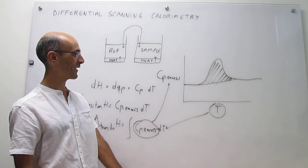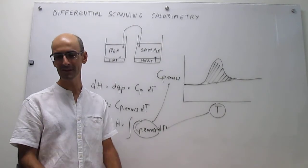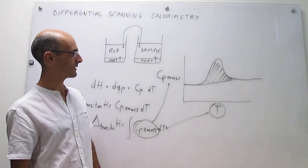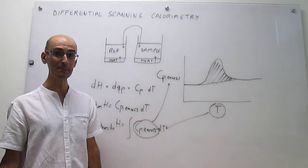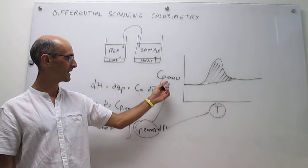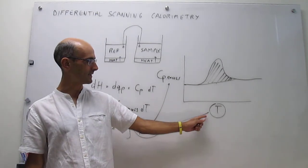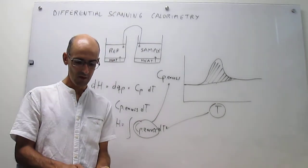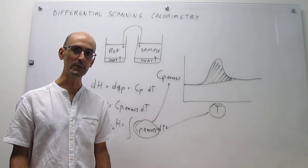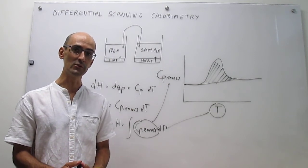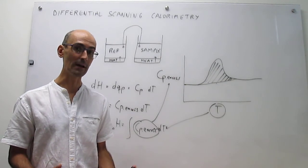So in differential scanning calorimetry, you can obtain the enthalpy of denaturation of proteins or DNA or polymers by simply taking the area of the thermogram, which is simply a representation of this excess capacity that we have defined in this video as a function of temperature. So this concludes this video about the fundamentals of differential scanning calorimetry. And next, we're going to move on to try to understand how to think about the enthalpies of chemical reactions.